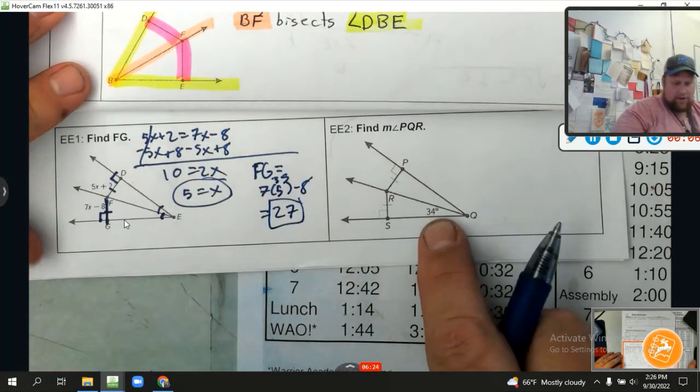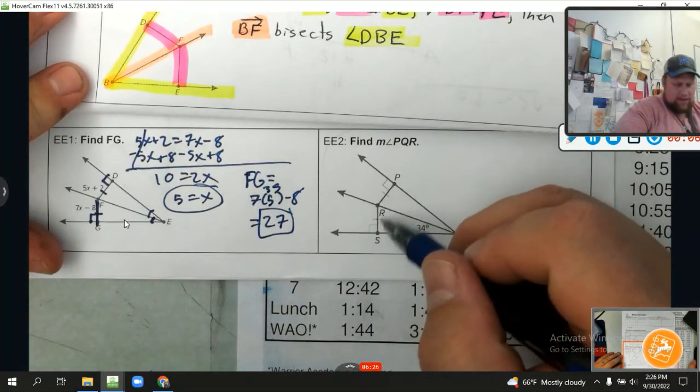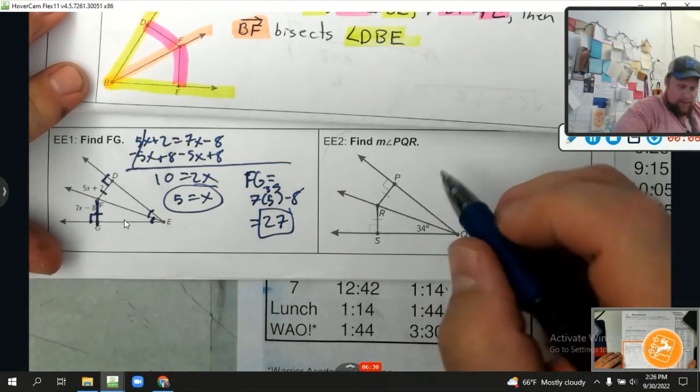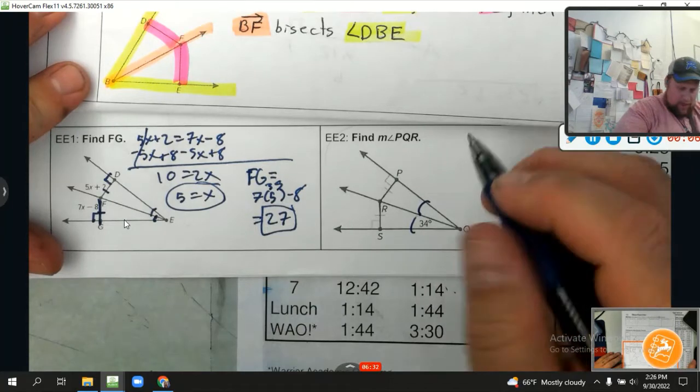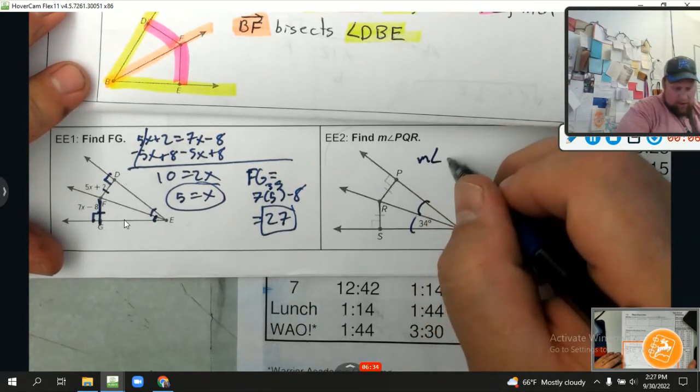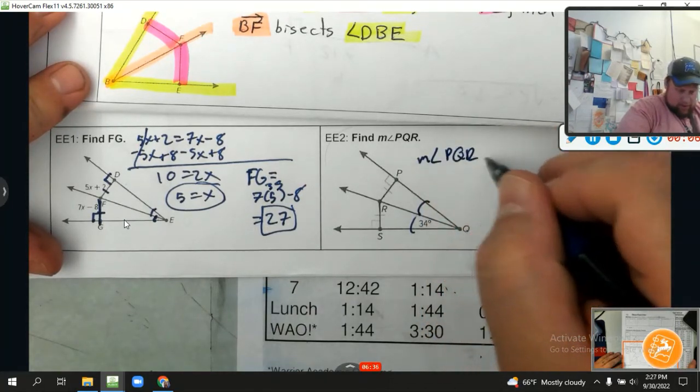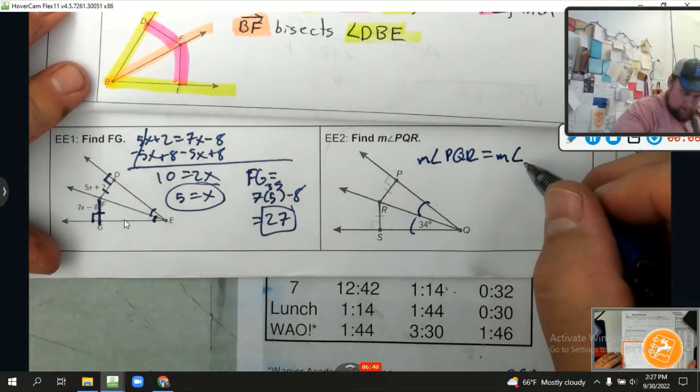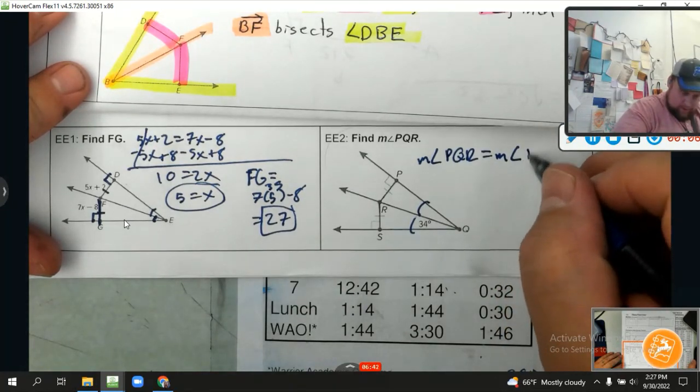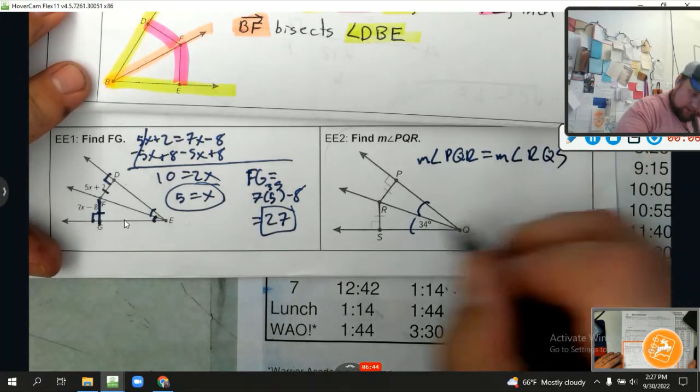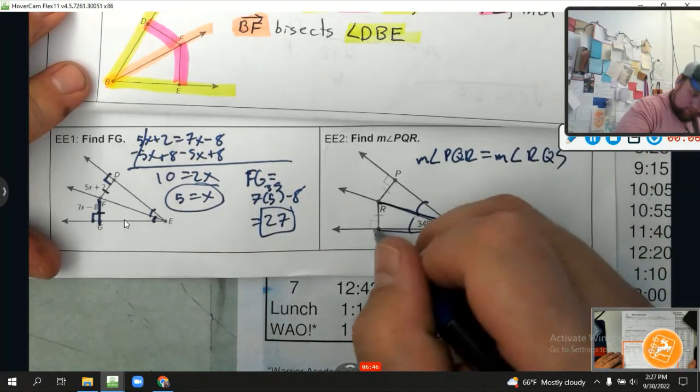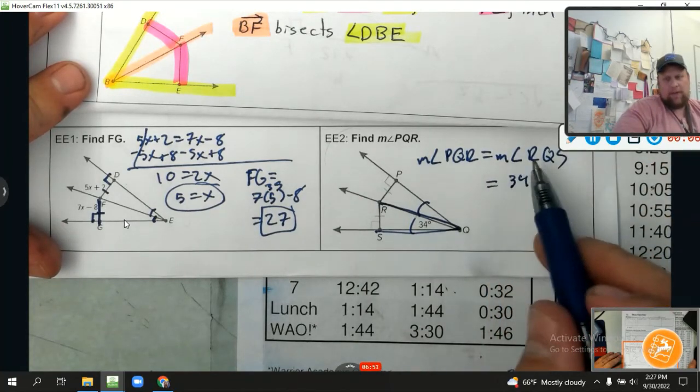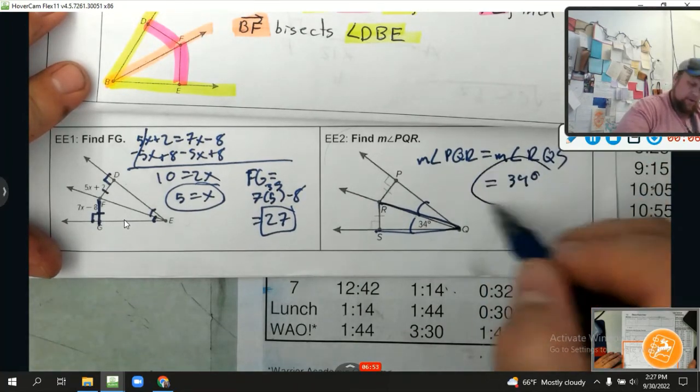And this one's even easier, guys. It's saying if these sides are the same length and they're perpendicular, this must be an angle bisector. So this angle is congruent to this angle, which means the measure of angle PQR equals the measure of angle RQS. That's this angle right here. Therefore, it equals 34 degrees.